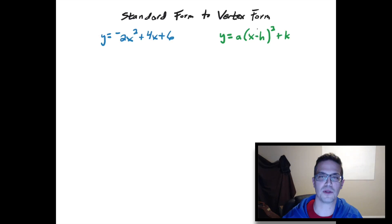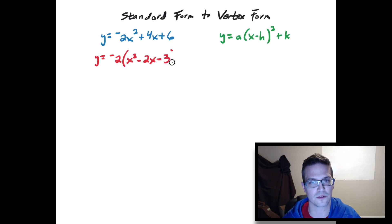So we basically want to get this blue to look like this green right here. In order to do this, we're going to have to use completing the square technique to figure this out. So first thing that we want to do here is factor out this negative 2 that's in the front. Factor out the negative 2 and you're going to get x squared minus 2x minus 3.